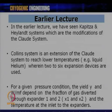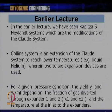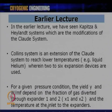For a given pressure condition, the yield y and the work done per unit mass of gas liquefied depend on the fraction of gas diverted to expanders 1 and 2, which are x1 and x2, and the temperatures T3 and T5 at the inlet to those expanders. These parameters decide the yield and work done per unit mass of gas liquefied for the Collins system.